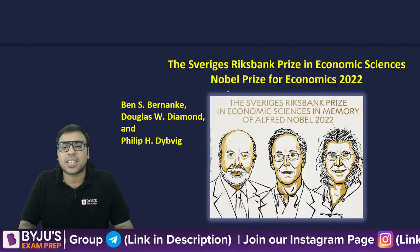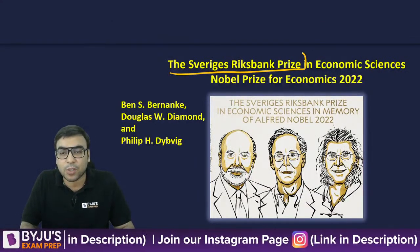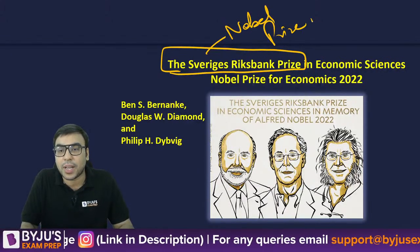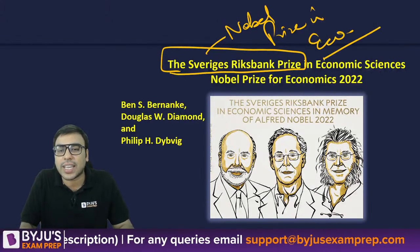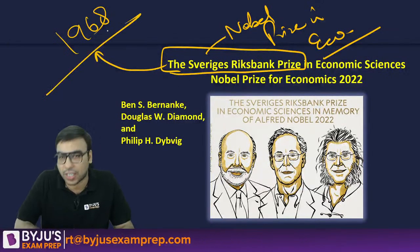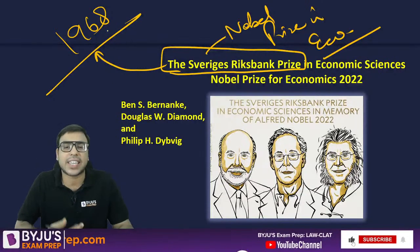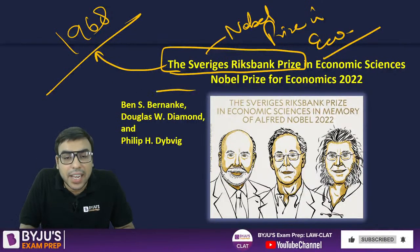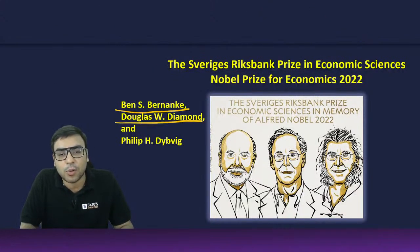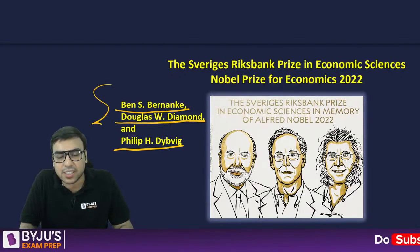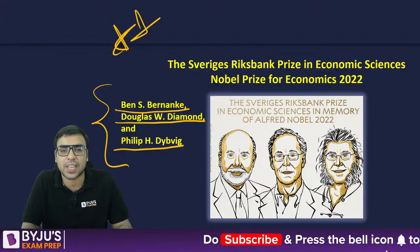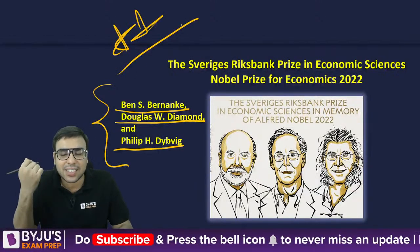The Sveriges Riksbank Prize — also called Nobel Prize in Economics — has been given to three people: Ben S. Bernanke, Douglas W. Diamond, and Philip H. Dybvig. This was in the news recently, discussed in today's The Hindu as well.